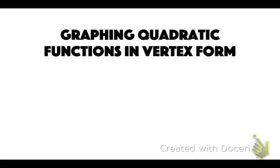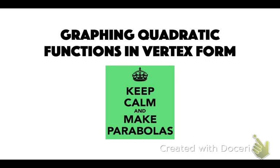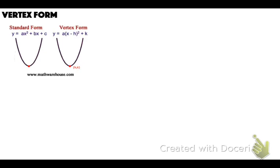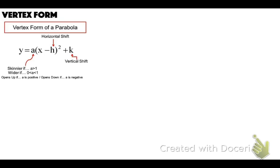Graphing quadratic functions when they're in vertex form. Quadratics are parabolas. Standard form is the form where you can factor it. Vertex form is a(x minus h) squared plus k. That tells you what the vertex is because the vertex is h comma k. A is your vertical stretch — skinnier if a is greater than 1, wider if a is between 0 and 1. H is your horizontal shift, and k is your vertical shift.